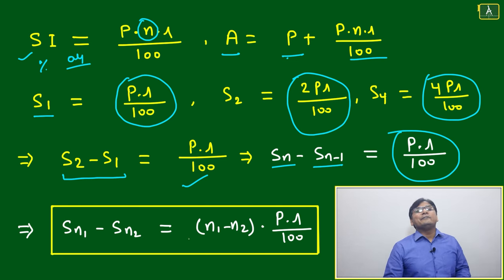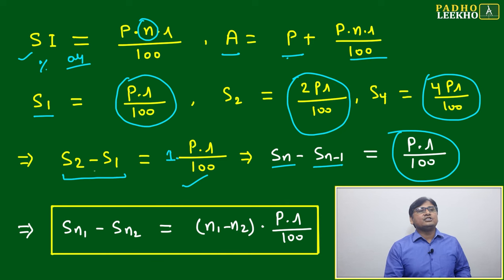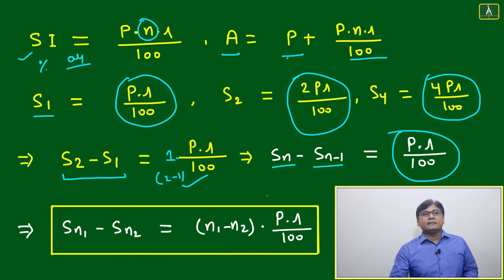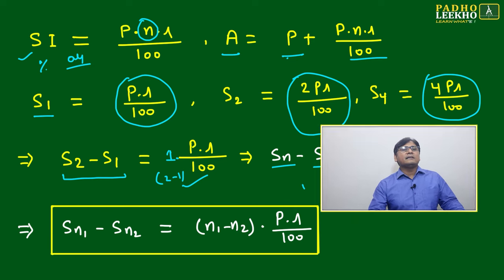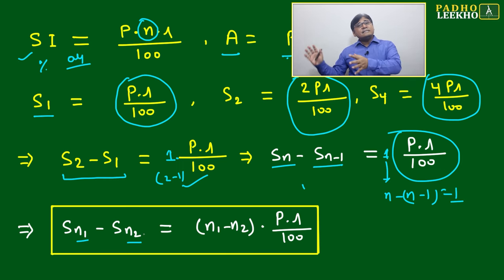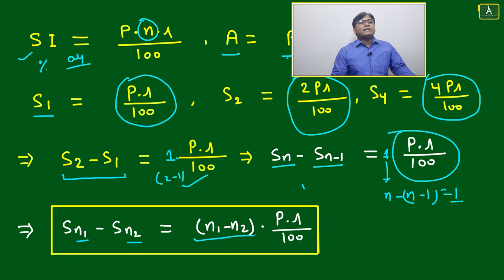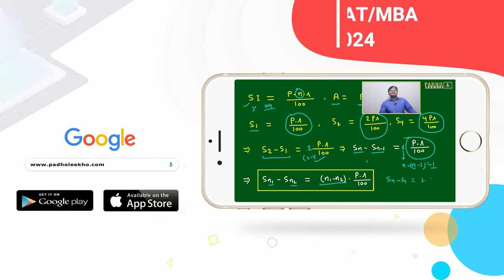When N1 and N2 are consecutive, the difference is one, so it becomes PR/100. But if we take non-consecutive years — for example, interest after four years minus interest after one year — S4 minus S1 gives (N1 − N2) × PR/100, which is (4−1) × PR/100 = 3 × PR/100. So the general formula for the difference in SI between any two time periods is (N1 − N2) × PR/100.